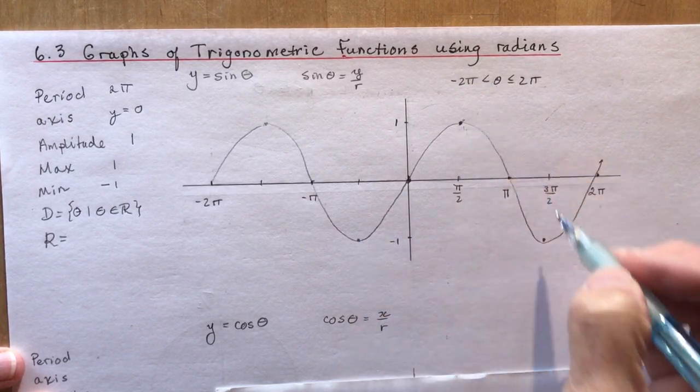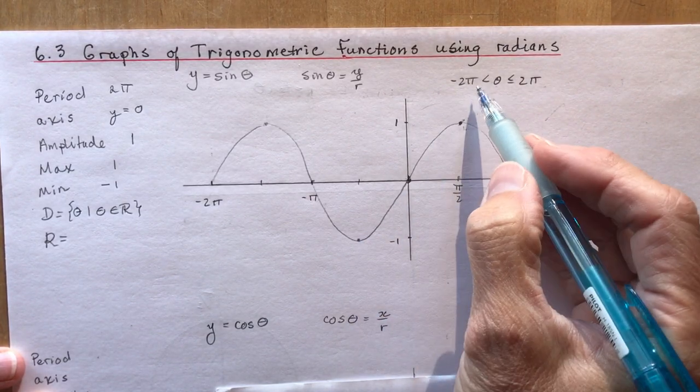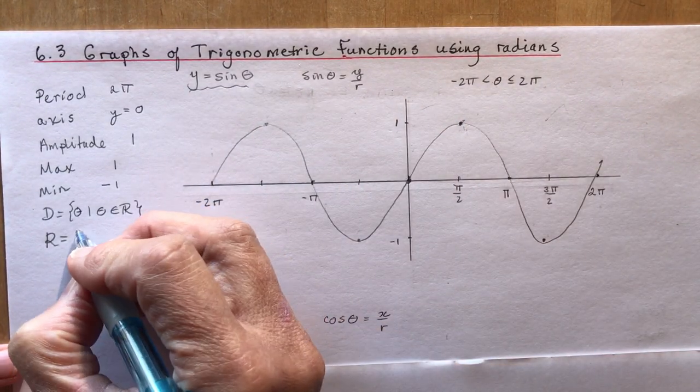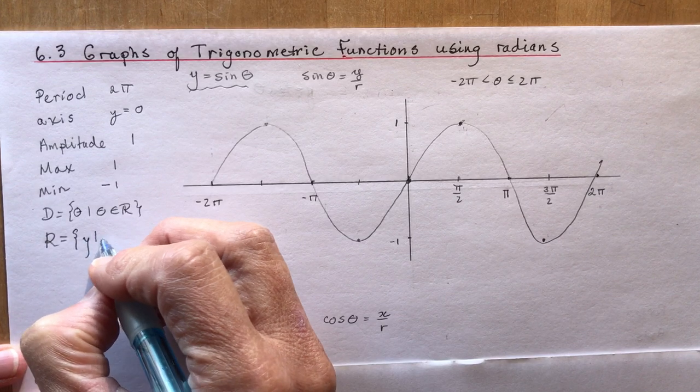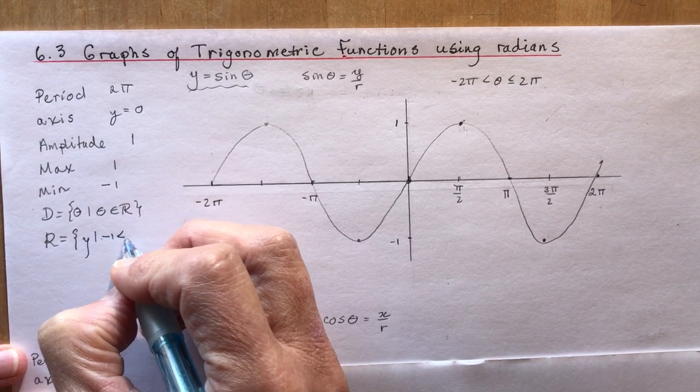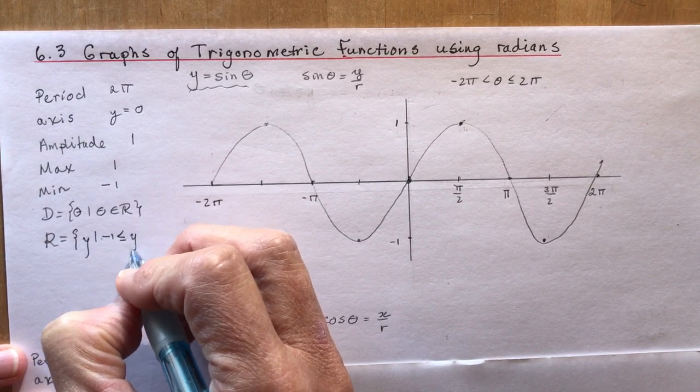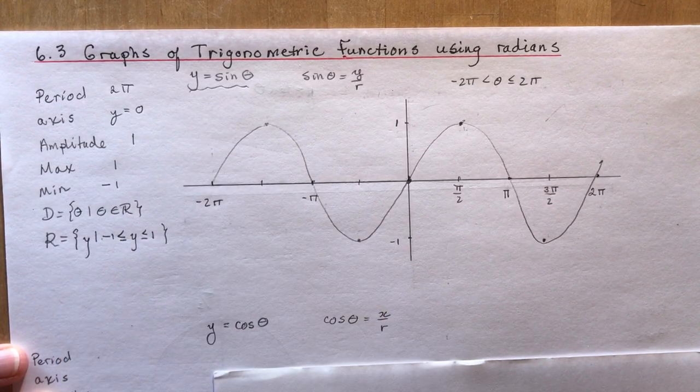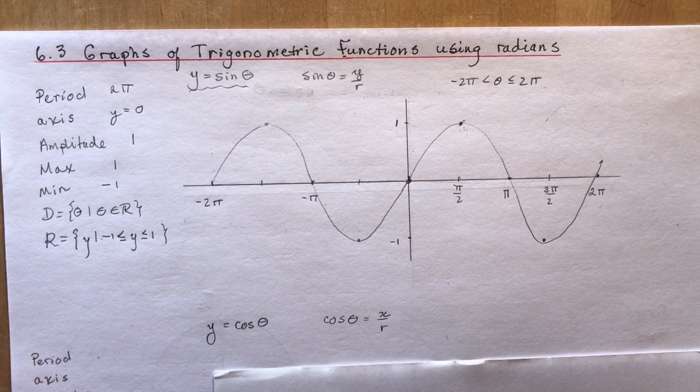And the domain is theta such that theta is an element of real numbers. We have no restriction on the domain. We do have a restriction on the range. The range goes from what's its high and low. So this is when you're talking about just sine theta though right. We're going to transform those in the next chapter. So y such that negative 1 less than or equal to y less than or equal to 1. And there you go.